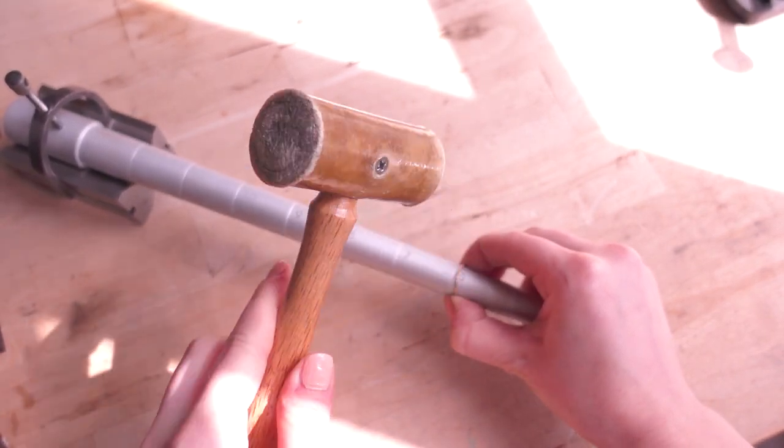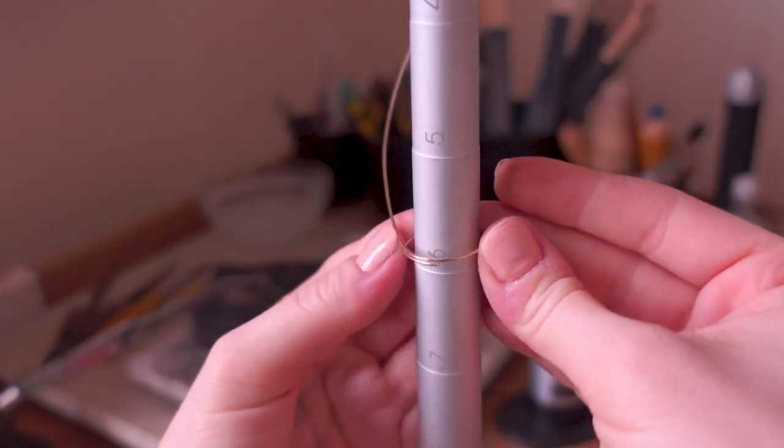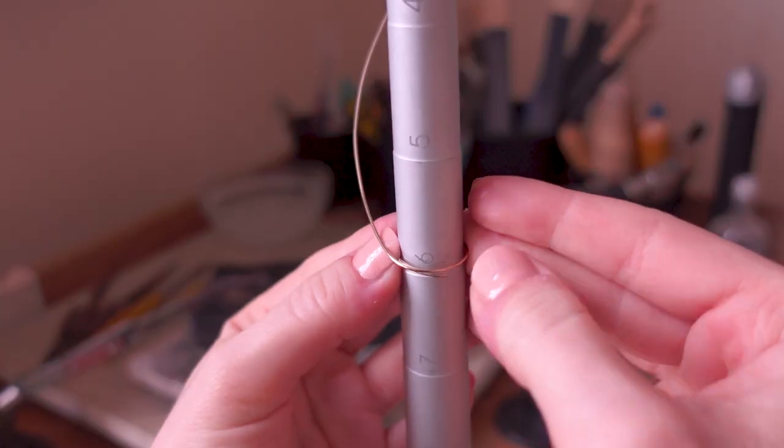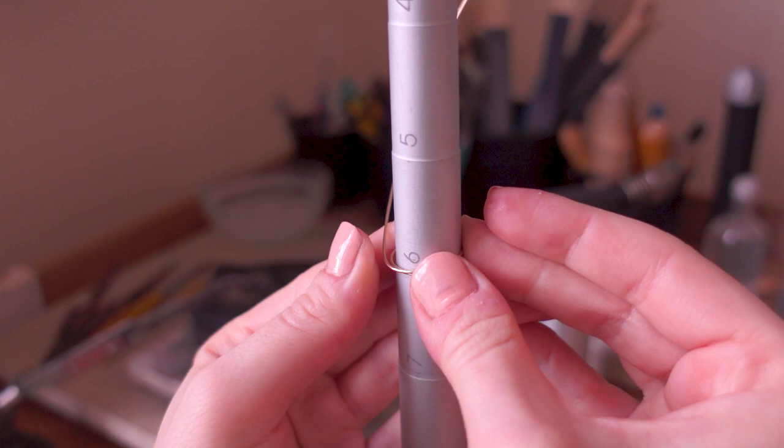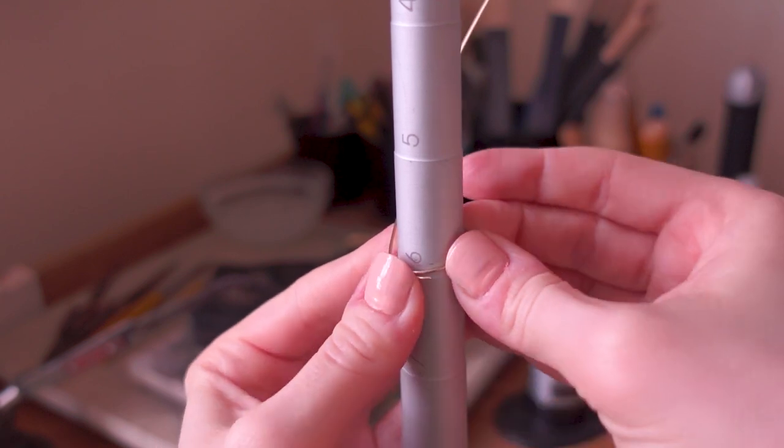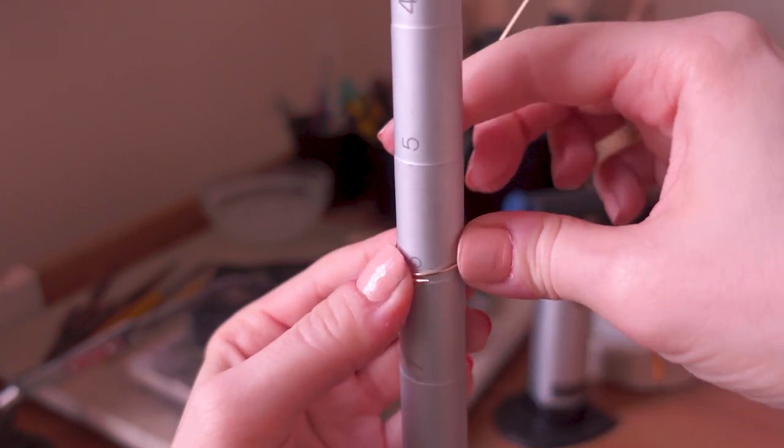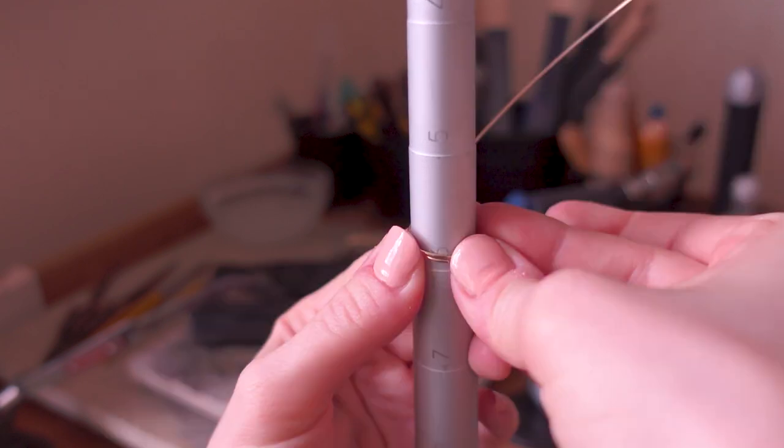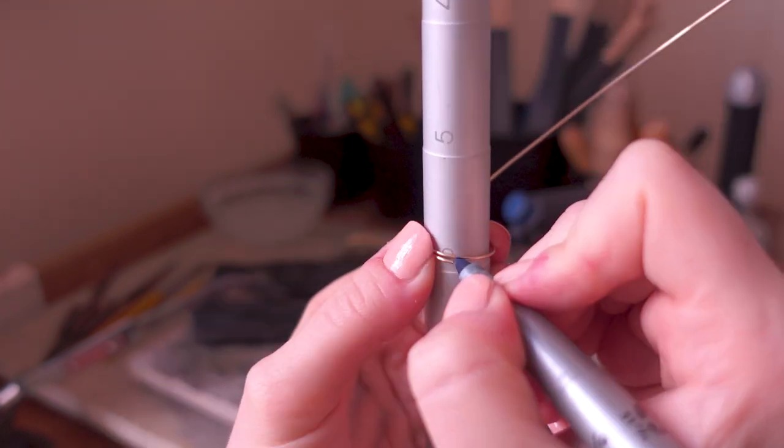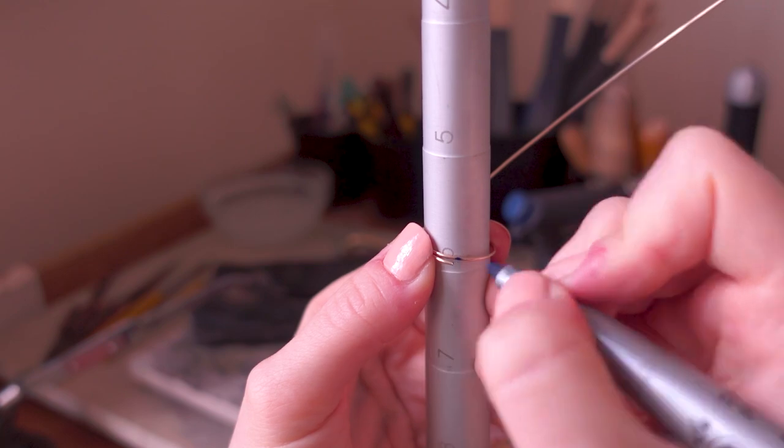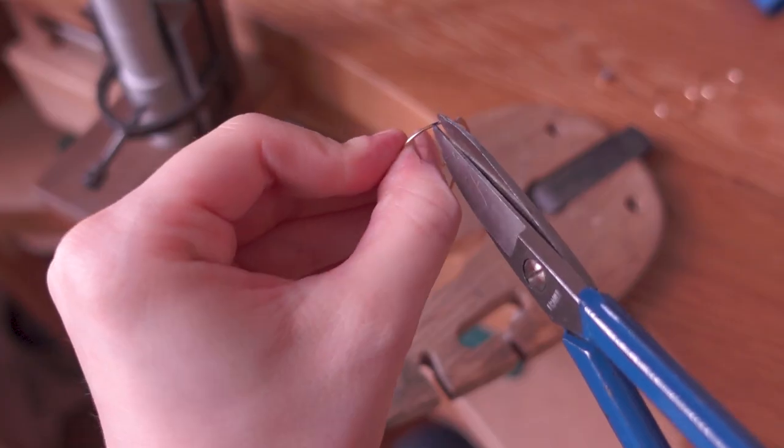So I'm going to use this rawhide mallet here. Then I'm going to check the size and not to worry because when I press it on the mandrel I can still get the size quite well. So I'm just going to mark it with a sharpie here and when it's marked I'm going to cut it with these scissors.